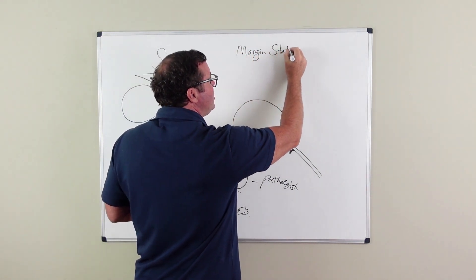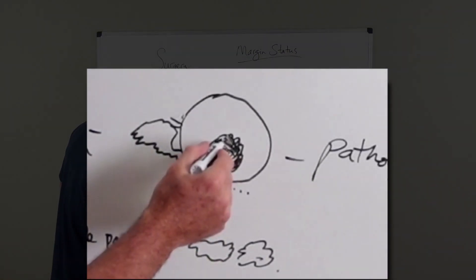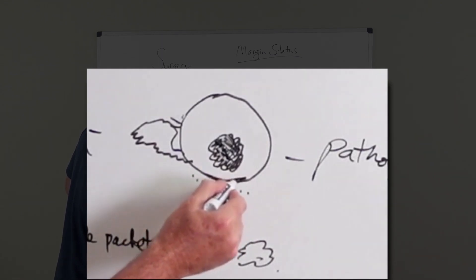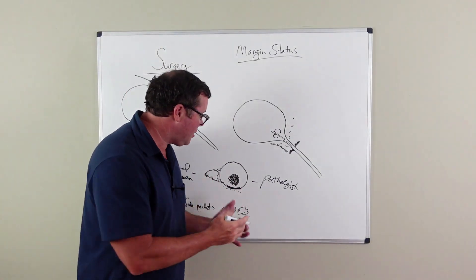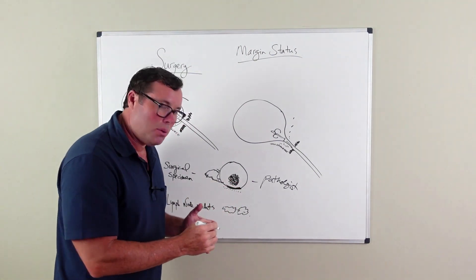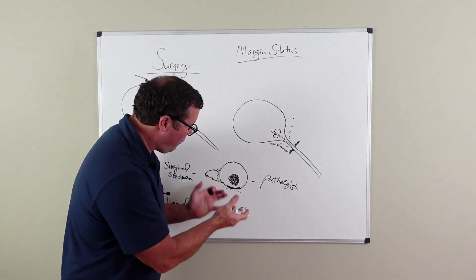And what your margin status is, is how close did this cancer get to the edge of this prostate? And really what you're trying to decide is, is it possible that the surgery was performed, the prostate was removed?